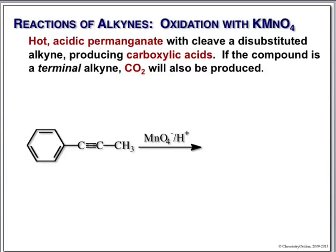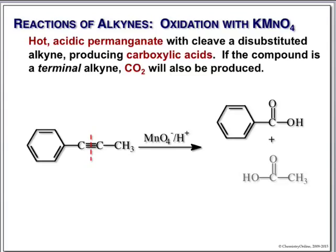Acidic permanganate, which we saw splits the carbon-carbon double bond in alkenes, also splits a carbon-carbon triple bond. When it does, each of the alkyne carbons becomes a carboxylic acid. This gives us benzoic acid from one carbon, acetic acid from a methyl-bearing carbon. If we have a terminal alkyne, we get CO₂.